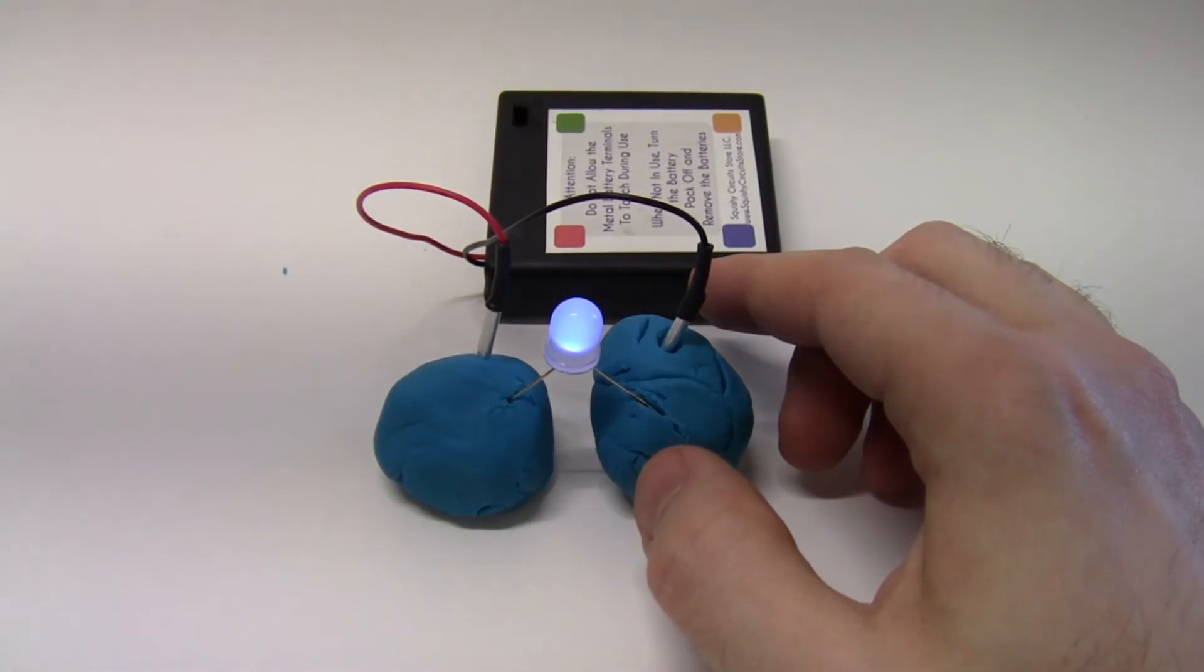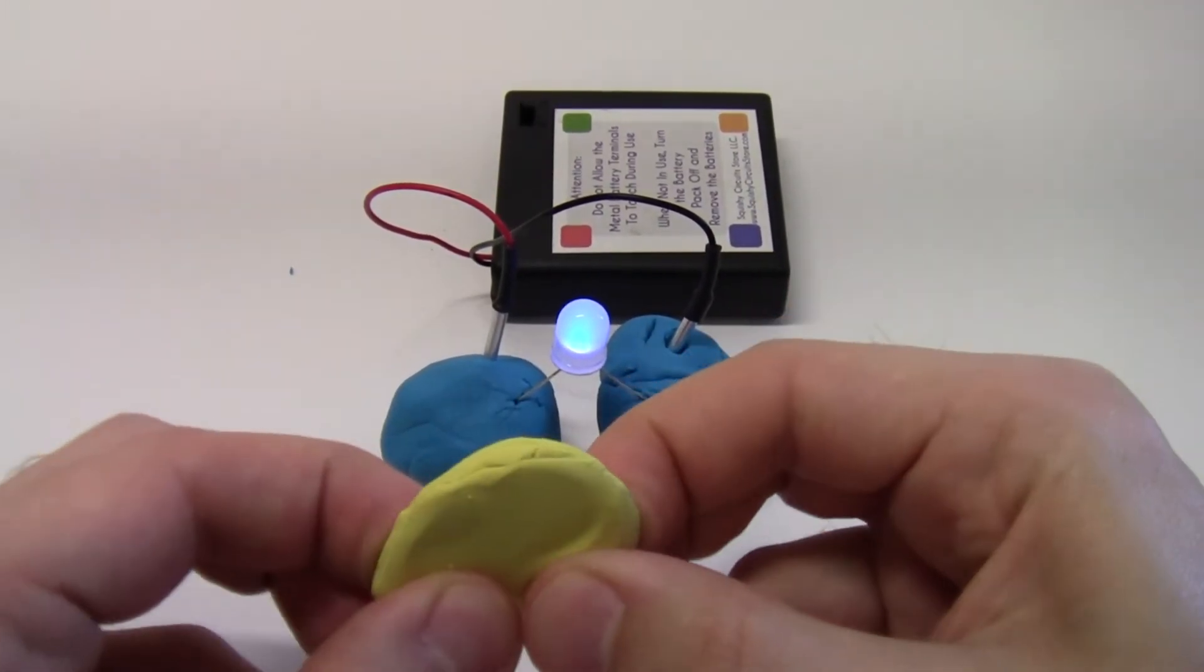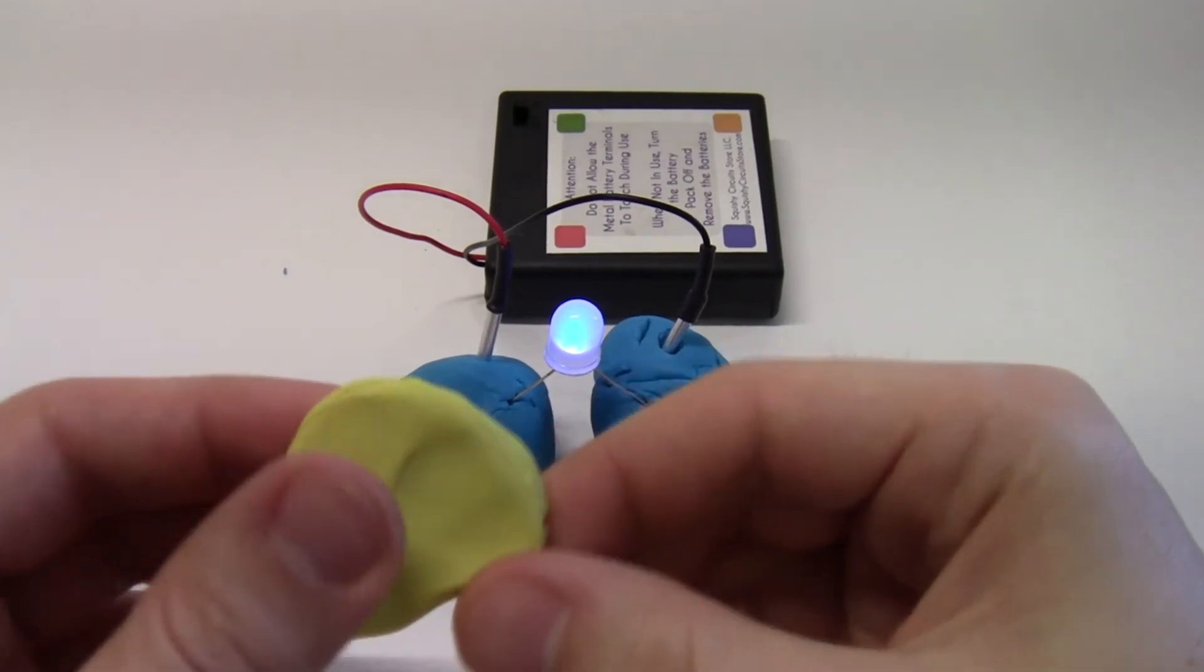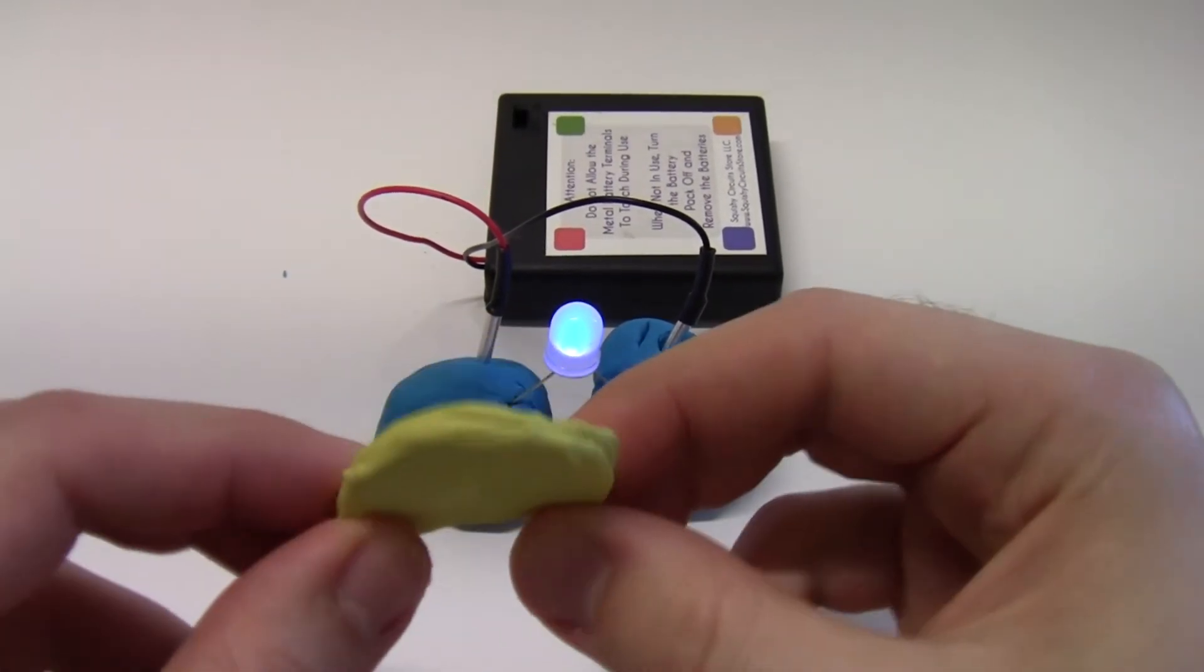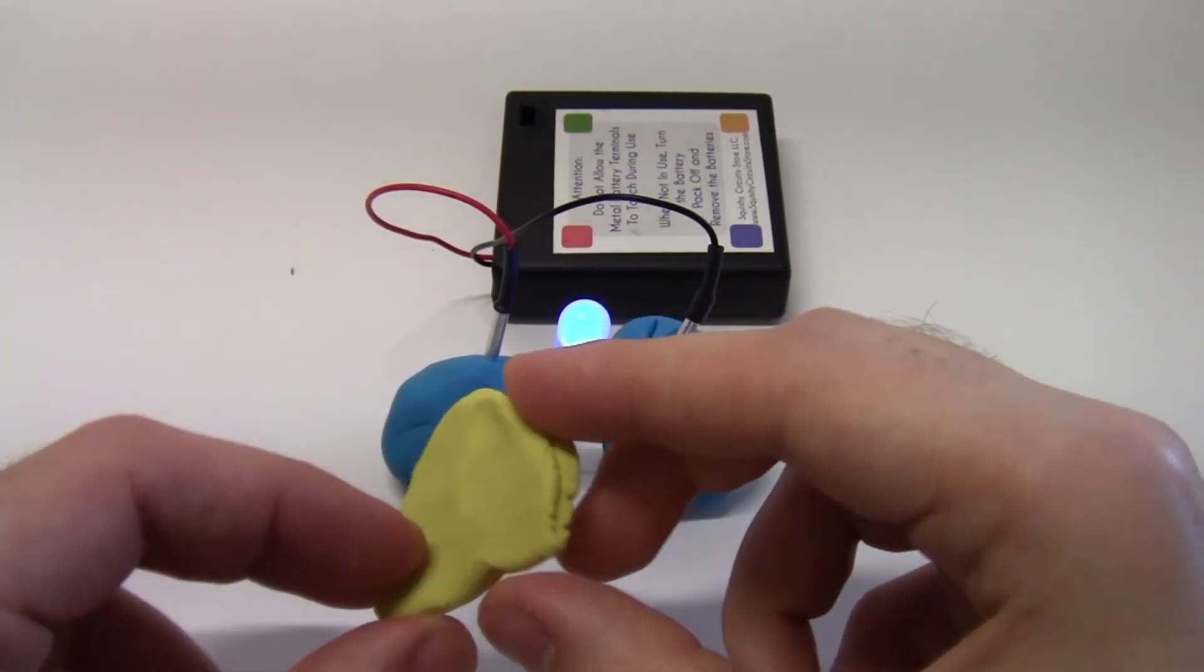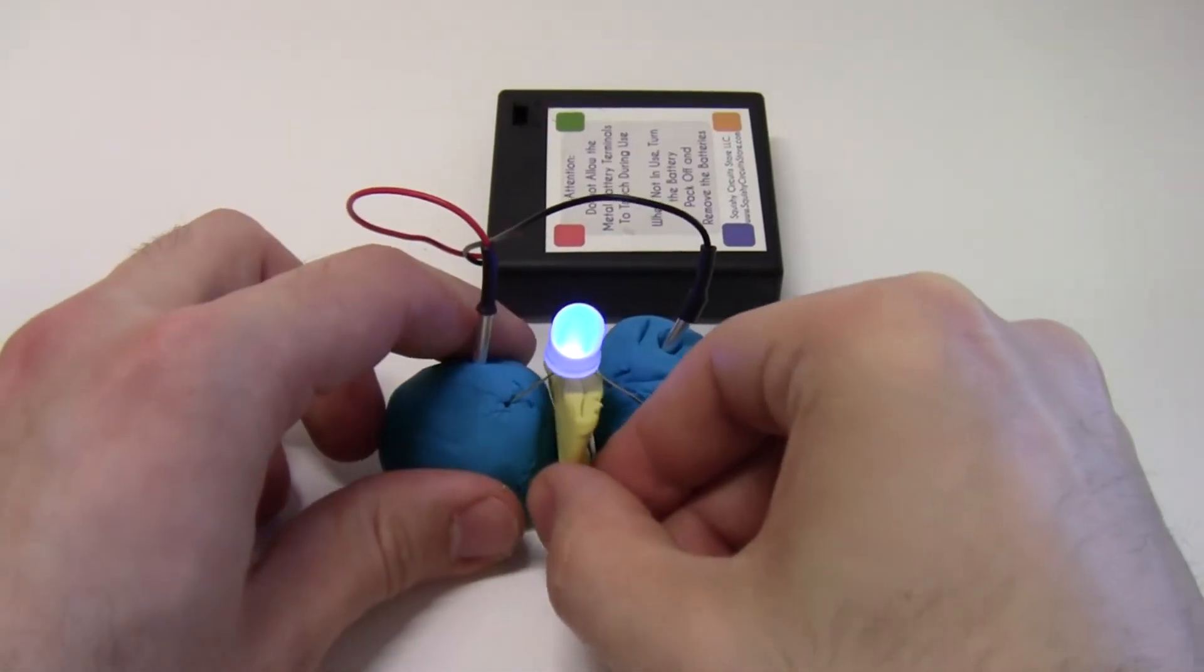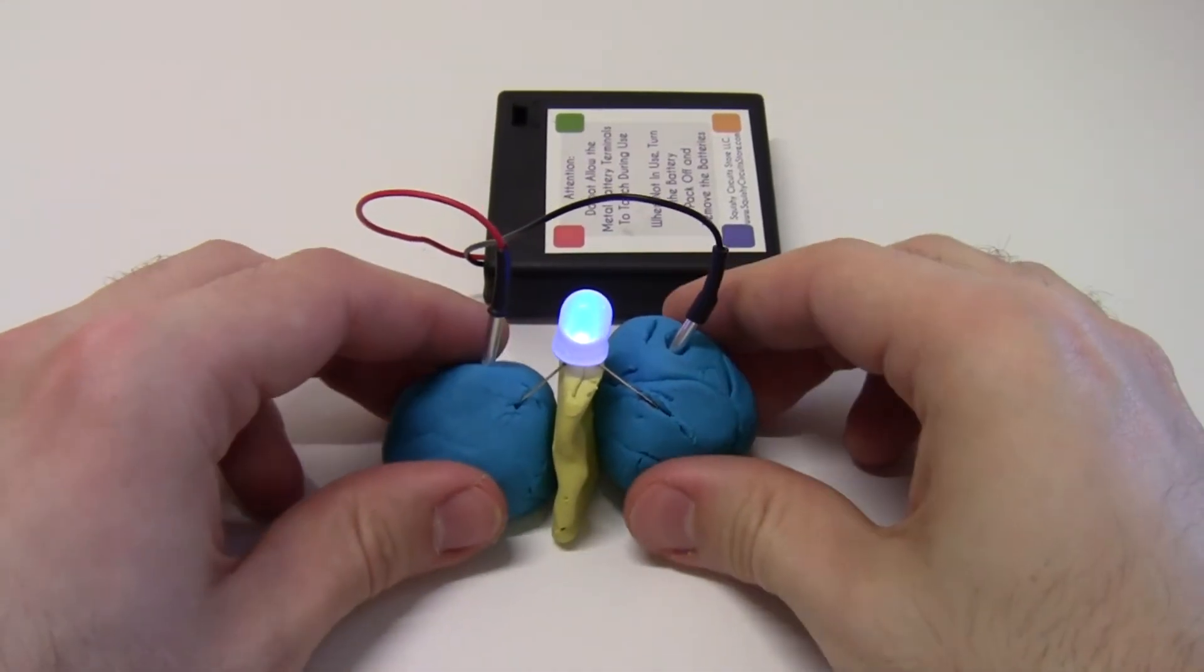So you can avoid this by introducing modeling clay or your homemade insulating dough. It turns out that Play-Doh is a conductor, meaning it lets electricity easily flow through it, whereas modeling clay is an insulator and it does not let electricity flow. So now what I can do is take a piece of modeling clay and insert it between these two lumps of Play-Doh.